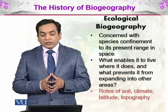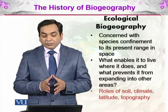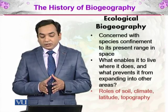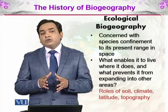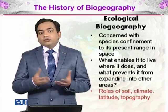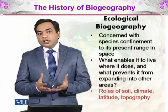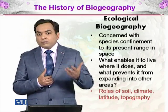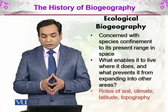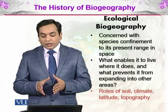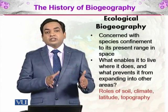Ecological biogeography is concerned with the species' confinement to its present range in space — what enables it to live where it does, and what prevents it from expanding to other areas. For example, why don't kangaroos live naturally in India? The roles of soil, climate, latitude, and topography, along with many other factors, are discussed in ecological biogeography.